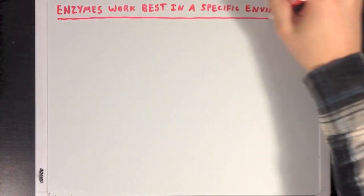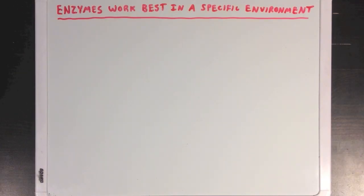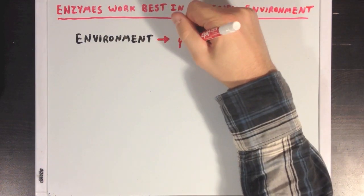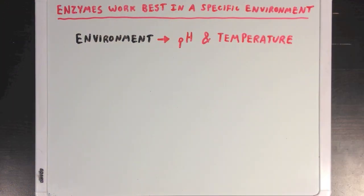It's important to recognize that enzymes work best in specific environments. When I say environment, I'm referring to many different aspects of an enzyme's surroundings, but right now we're only going to focus on pH and temperature values.